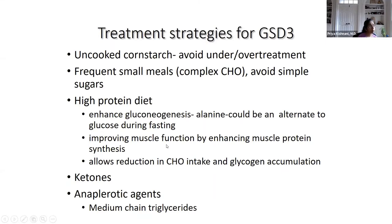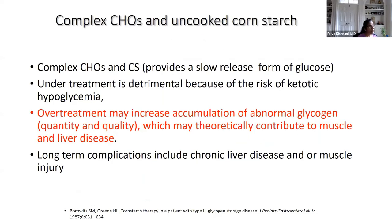High protein intake can improve muscle function by providing needed protein rather than forcing the body to break down its own muscle. It can also allow a reduction in cornstarch and carbohydrate intake, theoretically preventing glycogen buildup. It's important to emphasize that over-treatment may increase accumulation of the abnormal limit dextrin structure, which is abnormal not just in quantity but in quality — making GSD3 different from other glycogen storage diseases, which are more a quantity issue.